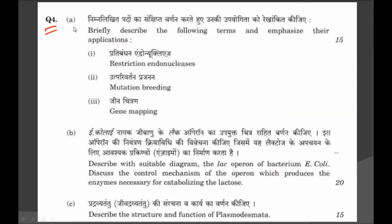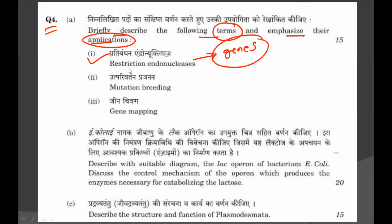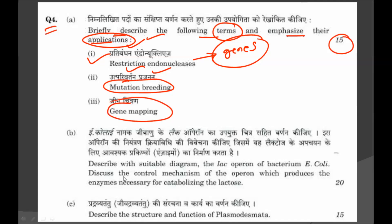Question 4: briefly describe the following terms and emphasize their applications. First is restriction endonuclease, an enzyme used in many biotechnological processes including gene transfer — describe the term and emphasize its applications. Then mutation breeding. Then gene mapping. For all three terms you will get 15 marks.